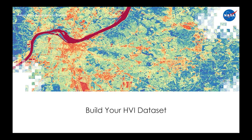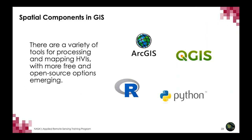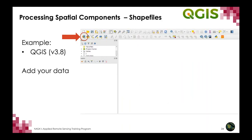Now Evan will take us through the process of building the HVI datasets and mapping them. There are a variety of tools for processing and mapping HVIs, with more free and open-source options emerging all the time. In this training, we're going to use Quantum GIS, or QGIS, specifically version 3.8, which is free to download for anyone. Since we're talking about HVI mapping, we'll begin with the spatial components in QGIS.